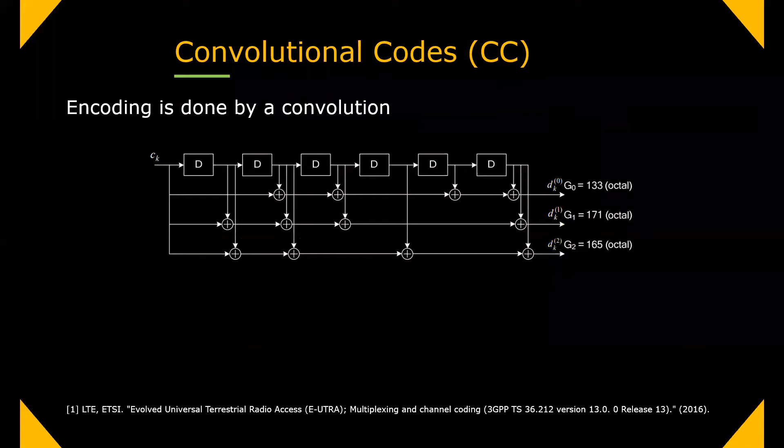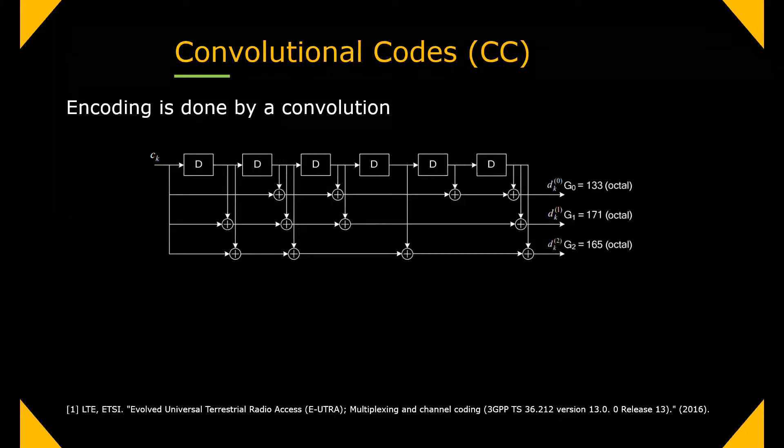Convolutional codes, or CC in short, are linear codes whose encoding is done by a convolution operation. The encoding can be viewed as in here, where each D box is a shift register with output delayed by a single time unit. At the left side appears an information bit, and at the right side we have the encoded bits that we actually transmit. That way, a message word is transmitted sequentially, bit by bit.